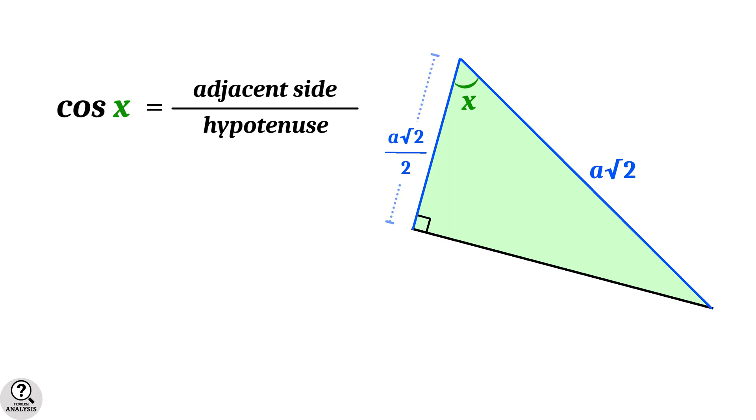According to this angle, the adjacent side is a root 2 by 2 and the hypotenuse is a root 2. On simplification, we get cos x equal to 1 by 2.